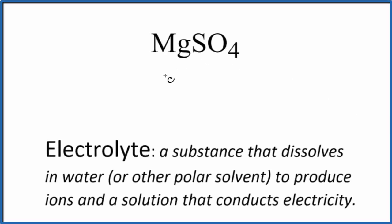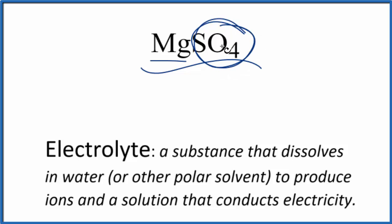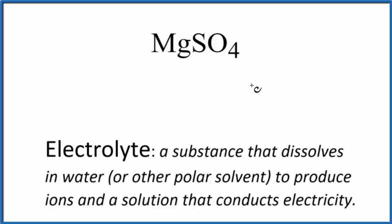In this video we'll answer the question whether MgSO4 is an electrolyte or a non-electrolyte. So we have our magnesium sulfate here. This is our sulfate ion. The first question we need to answer is what type of compound do we have here? Since we have a metal and a group of non-metals — this polyatomic ion — we have an ionic compound.